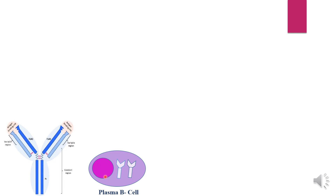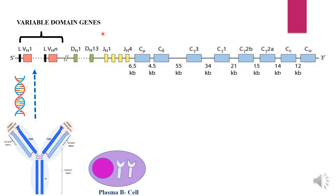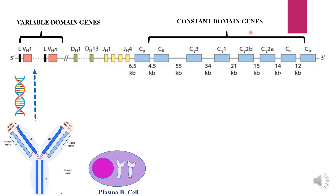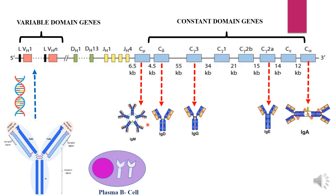The immunoglobulin molecule has a constant region and variable region, with an antigen binding site in the variable region. This immunoglobulin molecule is produced by plasma B cells. A plasma B cell is capable of producing five different classes of immunoglobulins, and these five classes are possible because of genes present in our chromosomes. The chromosome has two regions: the variable domain gene region and the constant domain genes, which produce the five different classes.